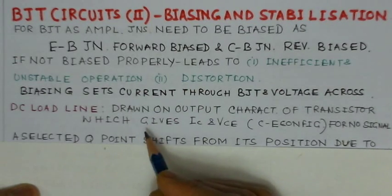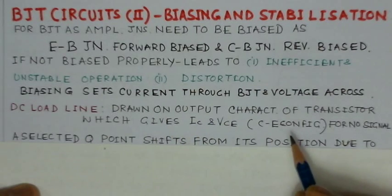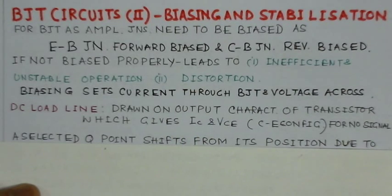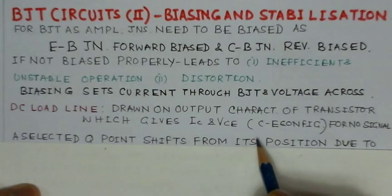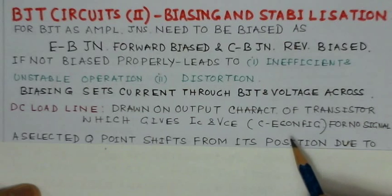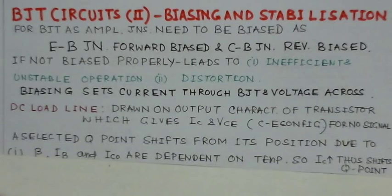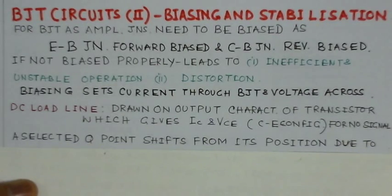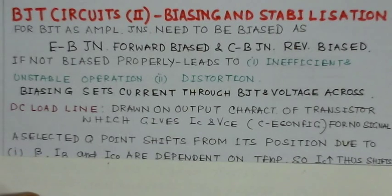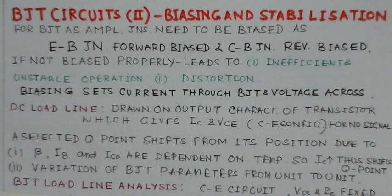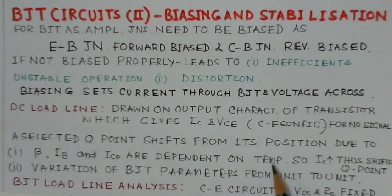Before we set a Q point, we need to know the DC load line. This load line is drawn on the output characteristic of a transistor, which gives IC and VCE — we have considered the common emitter configuration here. No AC signal is applied, which is why it is called the DC load line.